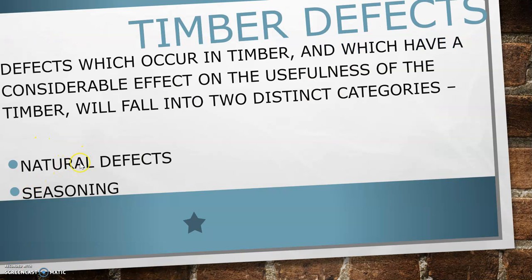Then there are the seasoning defects. Seasoning is the way we dry timber. Obviously timber is a tree — it's growing and it's full of moisture and sap, and that's called green. If you try building with green timber, it's more likely to split and shrink. So defects fit into two categories: natural and seasoning.